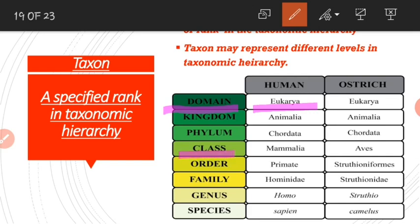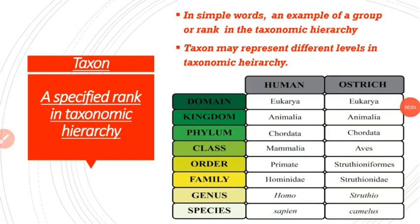Similarly, class is a taxonomic category, but when I specify the class — for example, class Mammalia and class Aves — I am referring to taxons belonging to the taxonomic category class. Mammalia, Aves, and Eukarya are all taxons. However, the taxons Mammalia and Aves belong to the taxonomic category class, which is ranked lower than the taxonomic category domain. Eukarya is a taxon of higher rank than Mammalia and Aves. So a specified taxonomic category is called a taxon.